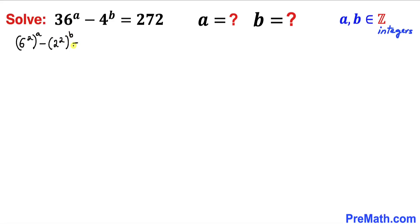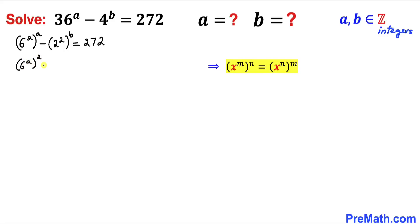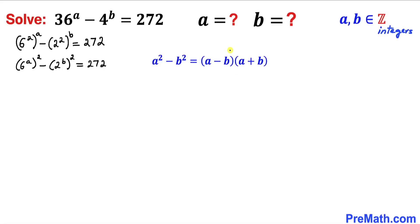Now let's recall this power rule of exponents: x^m raised to the power n could be written as x^(m times n). Applying this rule to our two terms, we get 6^a whole squared minus 2^b whole squared equals 272, that is (6^a)² minus (2^b)² equals 272.